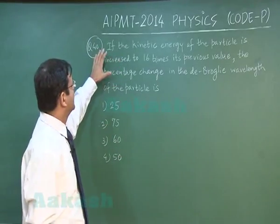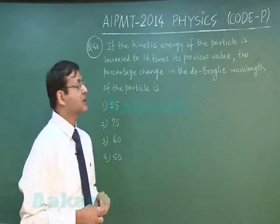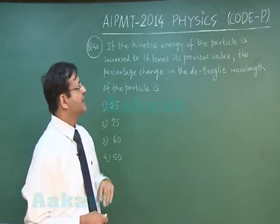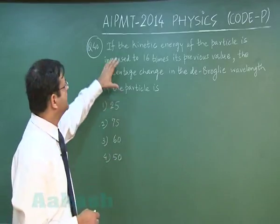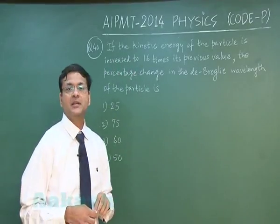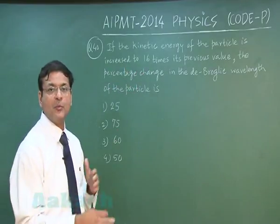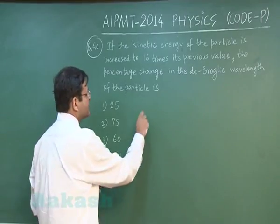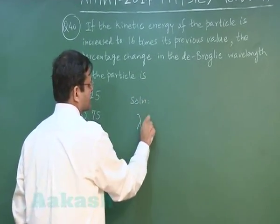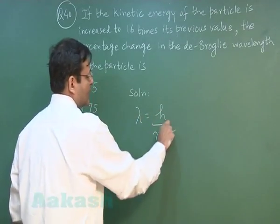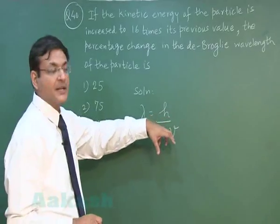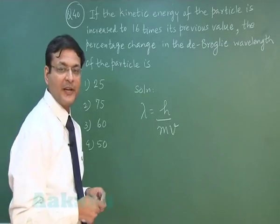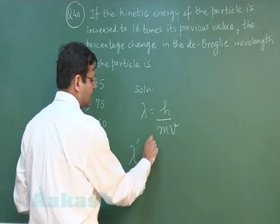Question 40 asks: if the kinetic energy of the particle is increased to 16 times its previous value, what is the percentage change in the de Broglie wavelength? Since kinetic energy increases 16 times, momentum increases to 4 times, because KE and momentum are related as KE = p²/2m. Since the de Broglie wavelength λ = h/mv = h/p, if momentum increases 4 times, lambda decreases to lambda/4.